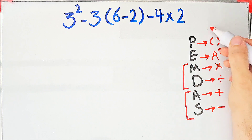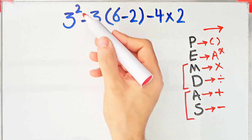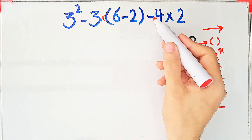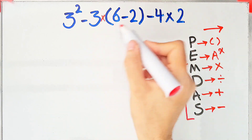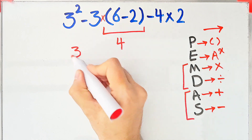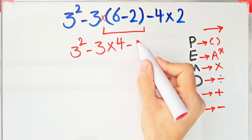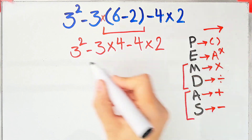In this question we have exponent, subtraction, multiplication, and parentheses. According to the PEMDAS rule, first we simplify the parentheses. Inside the parentheses we have 6 minus 2, which equals 4. Now the question is 3 to the power of 2, minus 3, times 4, minus 4, then times 2. In this step we simplify the exponent: 3 to the power of 2 equals 9.